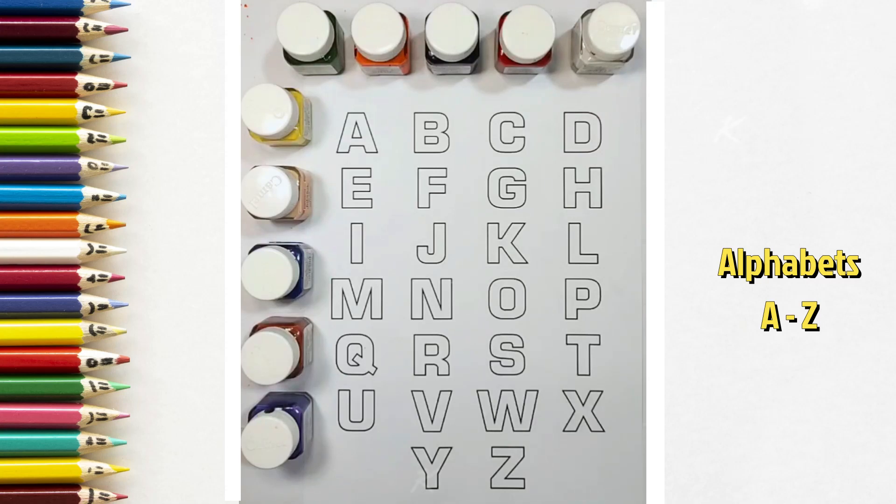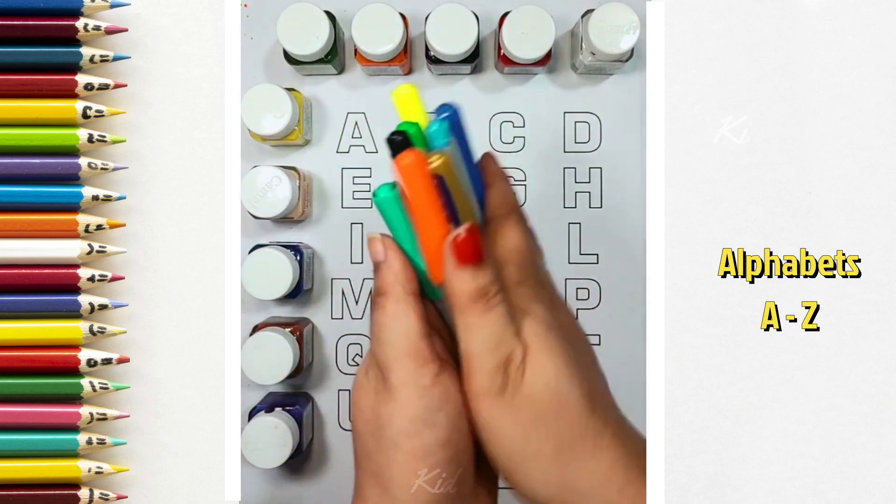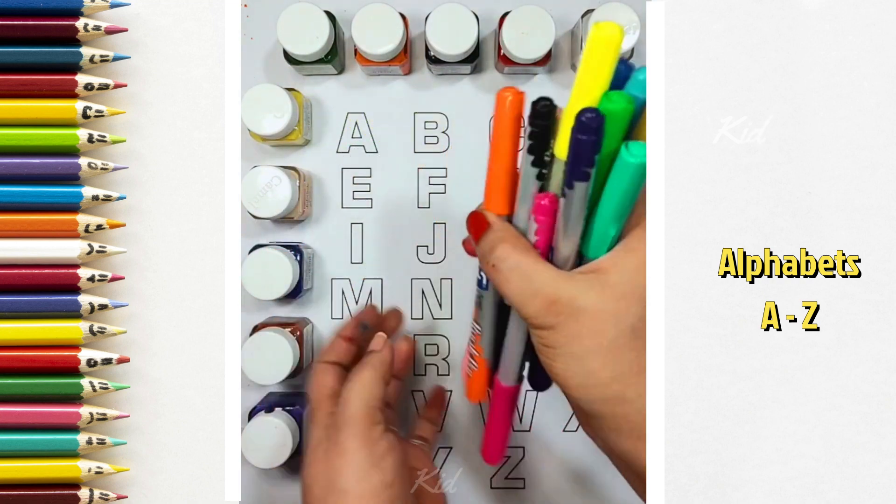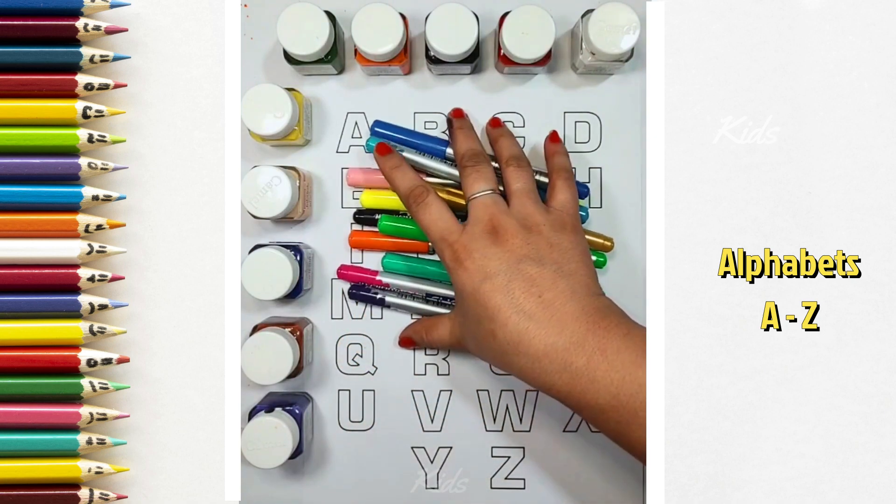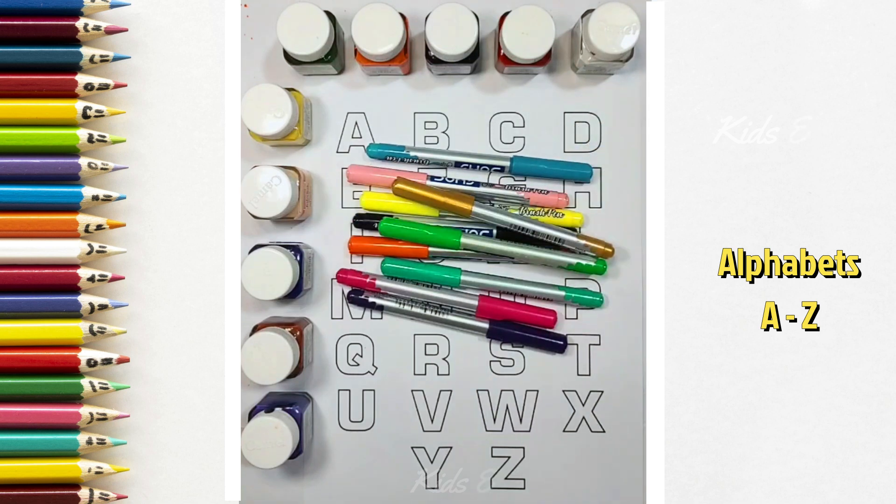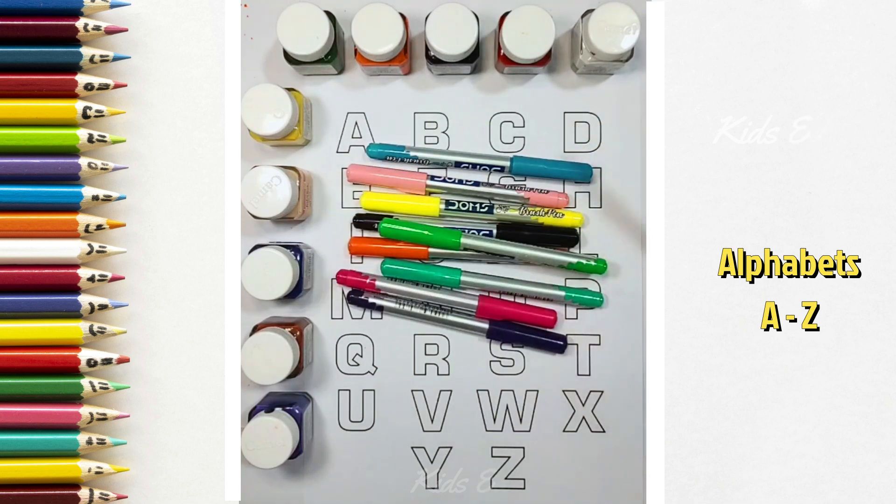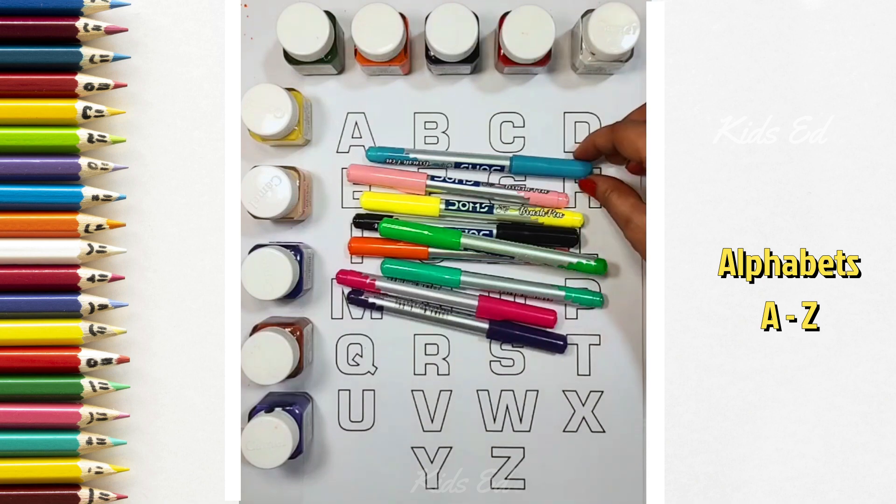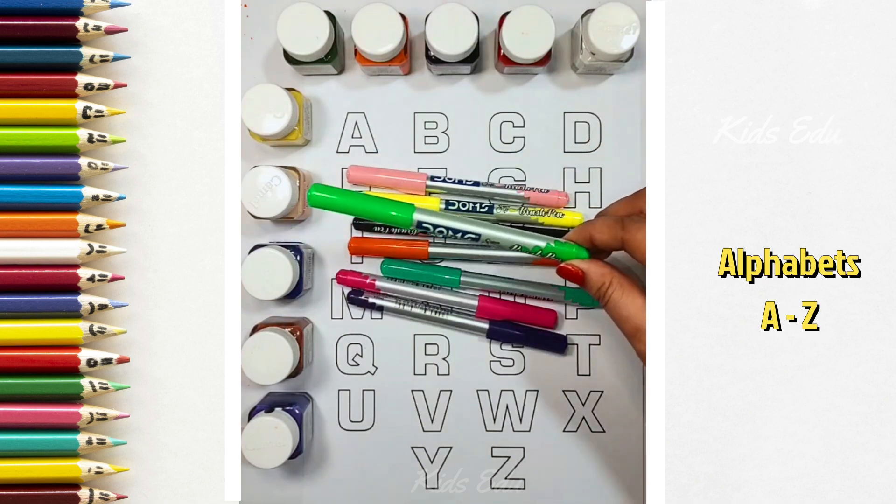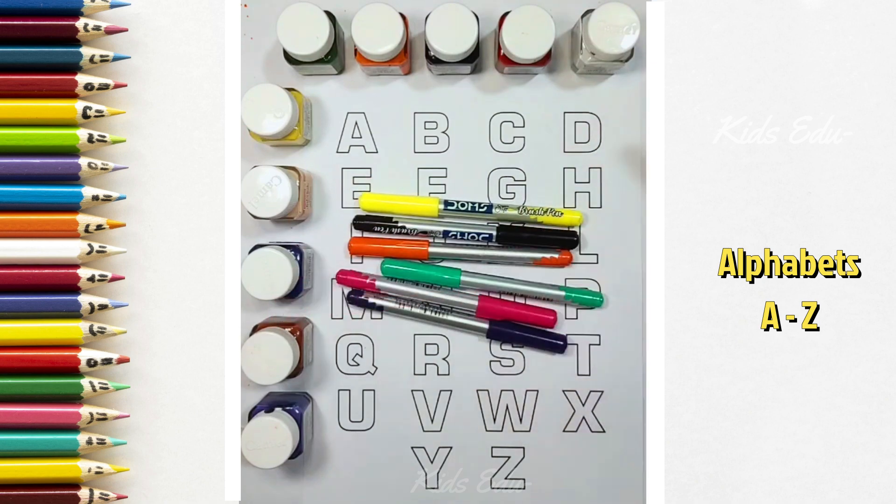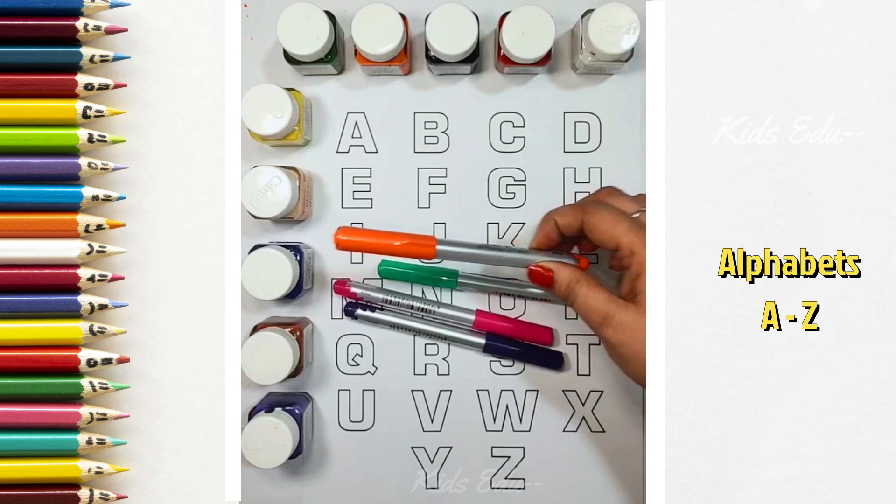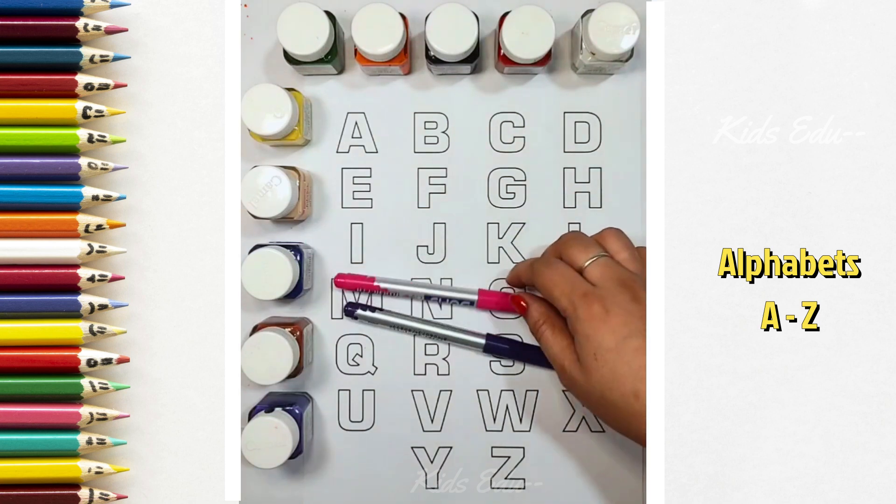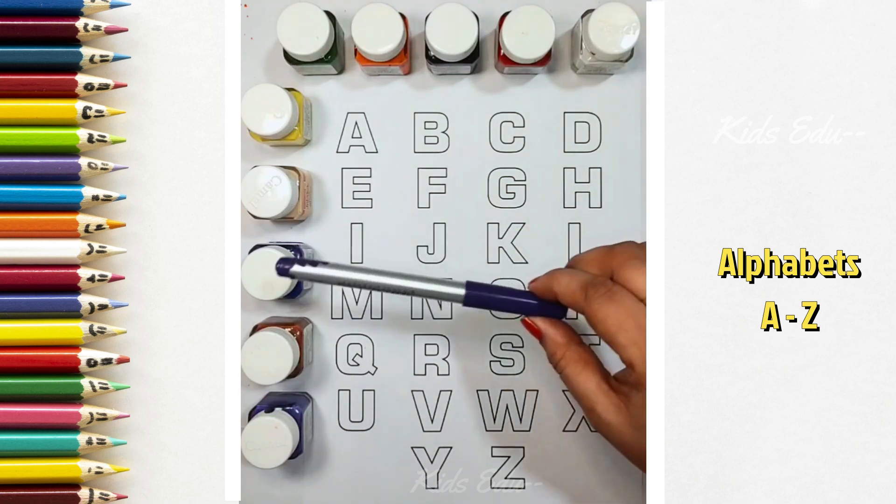Capital letters A to Z. Colors. Blue color, golden color, sky blue color, light green color, peach color, yellow color, black color, orange color, green color, pink color, purple color.